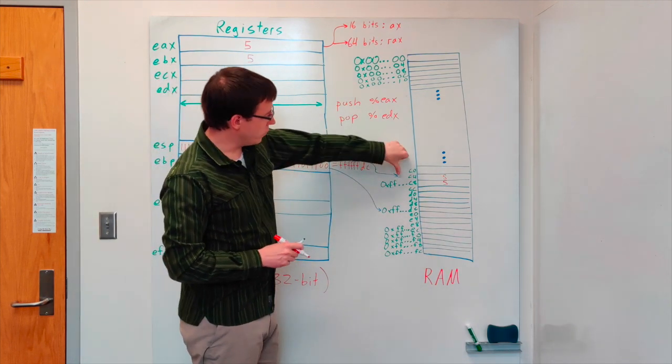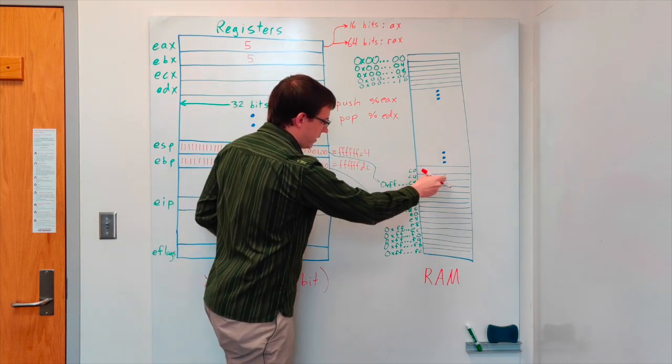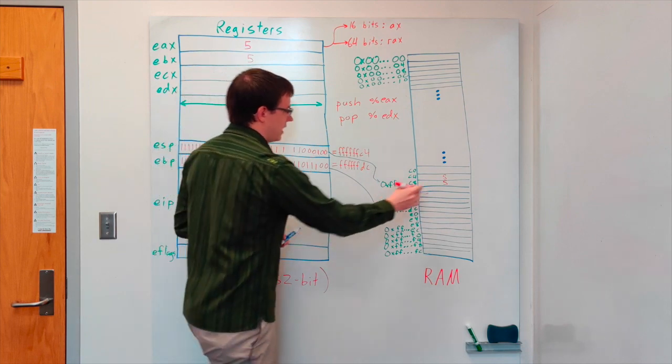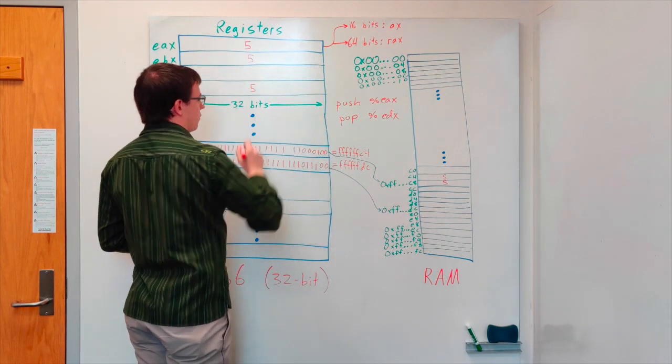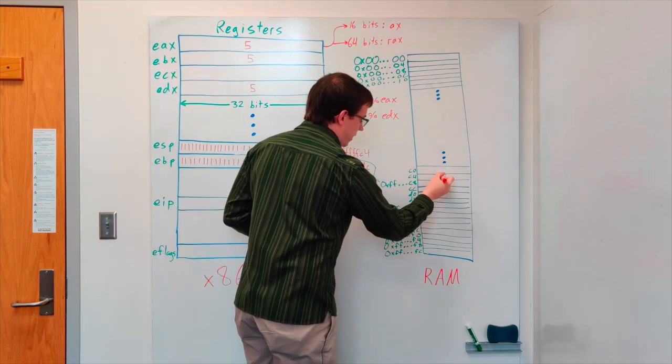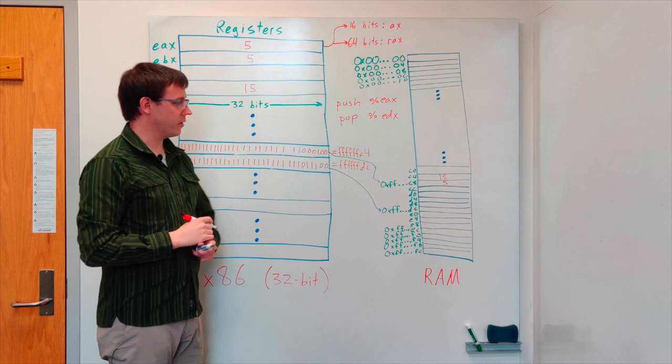So here we would move the pointer back down and copy the data that was previously at the top of the stack, this data here, into the EDX register. If this value had been 15, we would have copied a 15 into the EDX register.